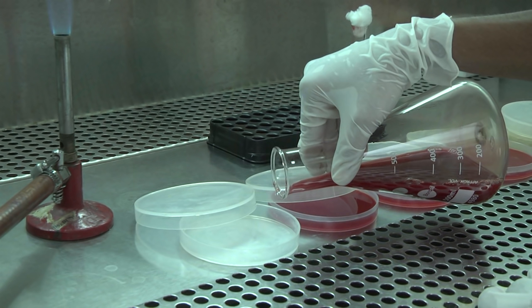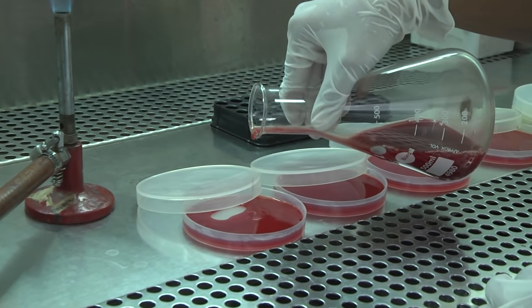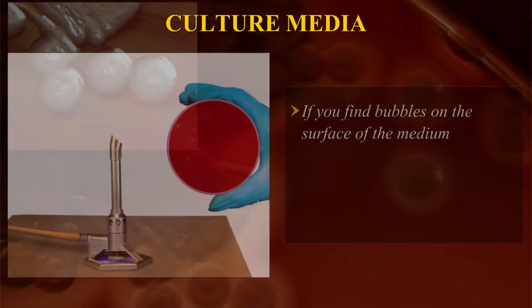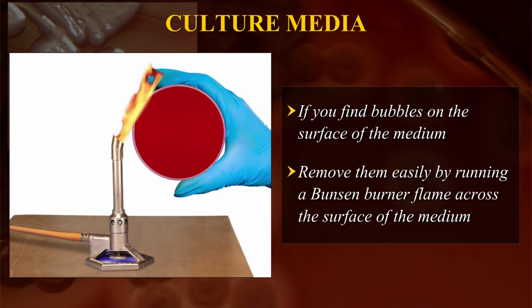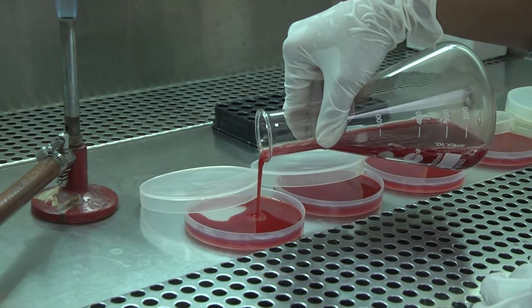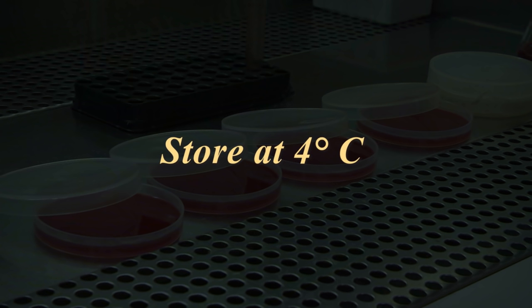After a homogeneous mixture is obtained, get ready for pouring into plates. Follow the precautions mentioned in the distribution of media section. Any bubbles on the surface of the agar should be removed by passing the flame of the Bunsen burner across the surface. After pouring the media into plates, leave them undisturbed till the agar is solidified. Then stack the plates, seal them in plastic bags, and store at 4 degrees centigrade.